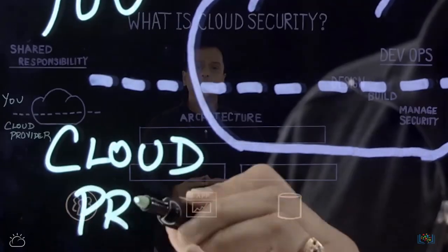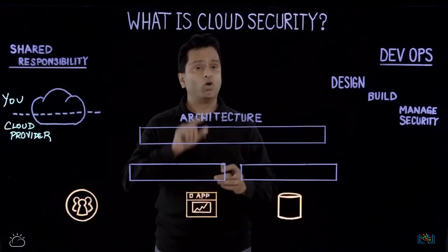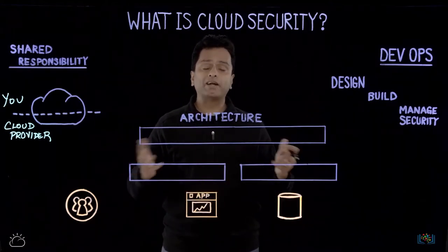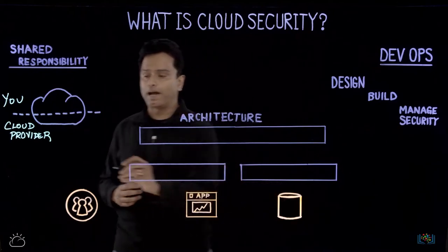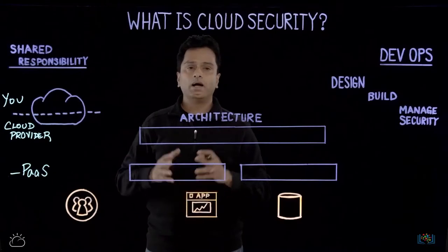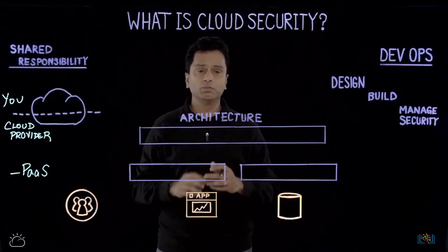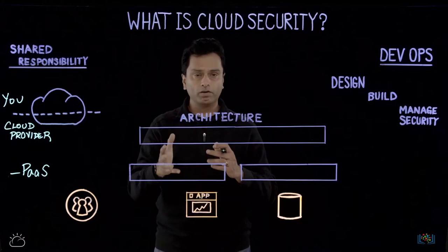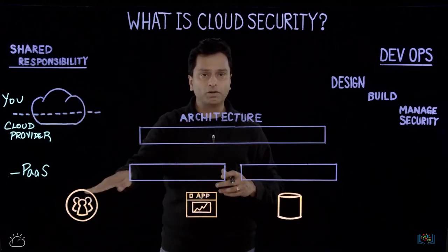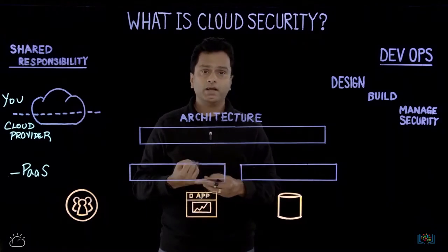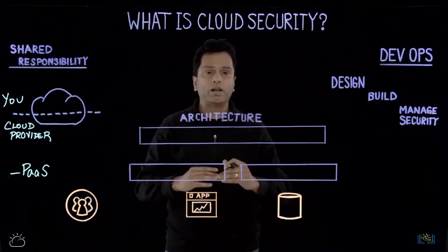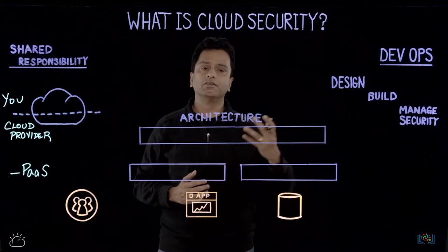In a shared responsibility model, you need to rethink security — what your responsibility is and what the cloud provider's responsibility is. Take platform as a service as an example. With PaaS, you're building applications, migrating data to the cloud, so you're responsible for securing the applications, the workload, and the data, while the cloud provider is responsible for managing the security of the platform so that it's compliant, secured from the perspective of network, managing the containers, and the runtime.